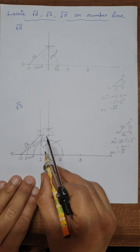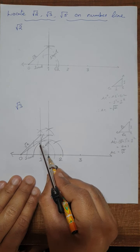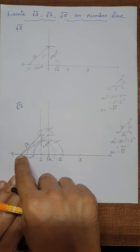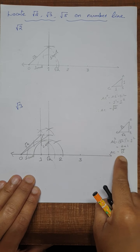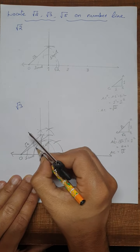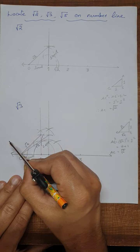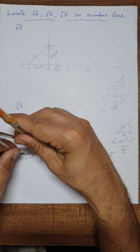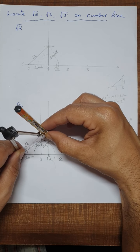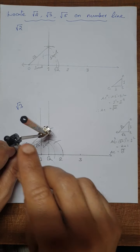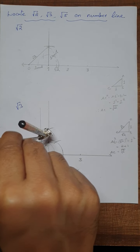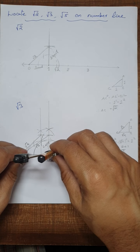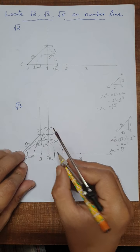Now we have a right triangle with base root 2 units and height one unit. We can easily calculate the hypotenuse — it will be root 3 units. We take that distance in the compass. This is the length of the hypotenuse, root 3 units. Now we are going to locate root 3 on the number line — we draw an arc and that point is root 3.